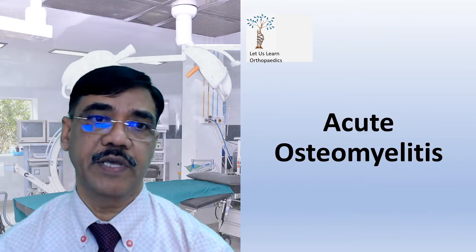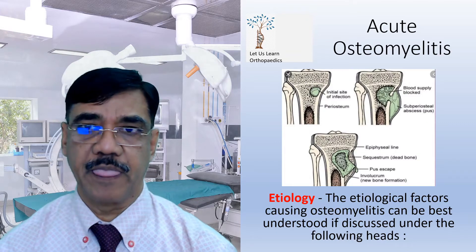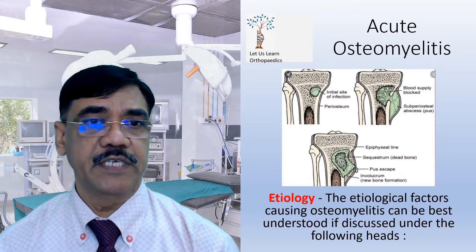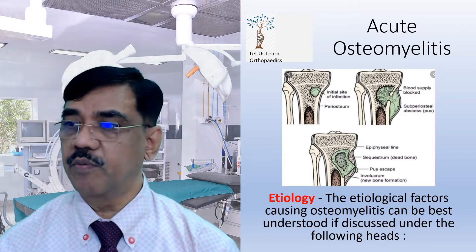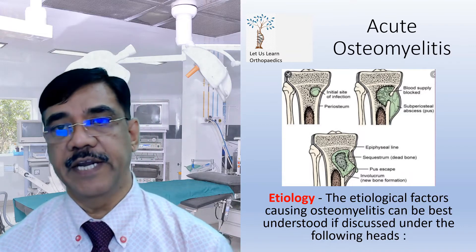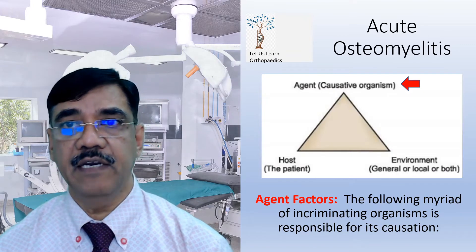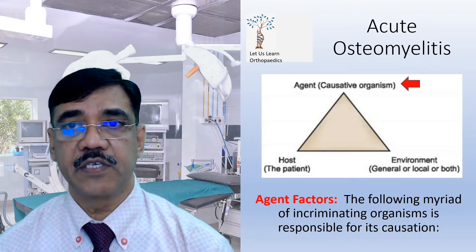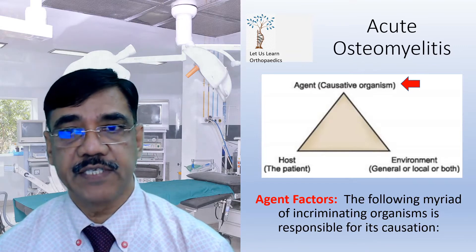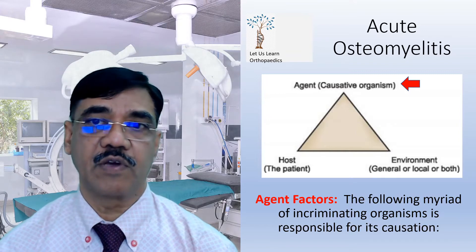Let us today discuss more about acute osteomyelitis. The etiological factors causing osteomyelitis can be best understood if discussed under the triad model — a triangle consisting of the agent (the causative organism), the host (the patient), and the environment (general or local factors).